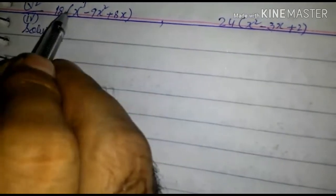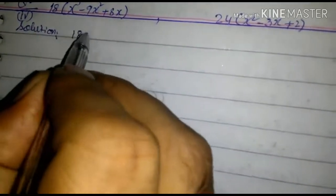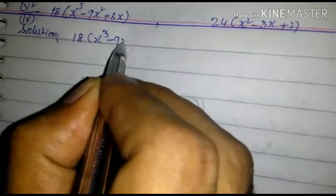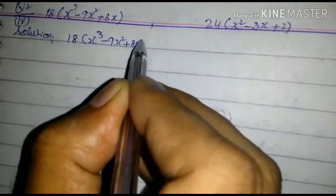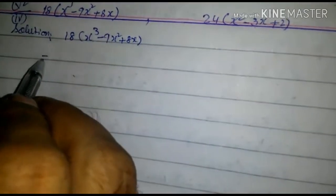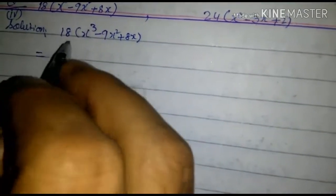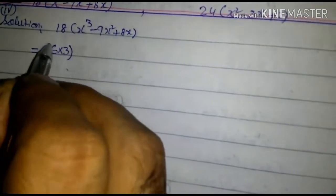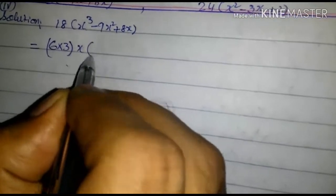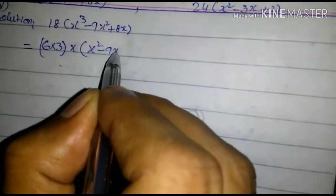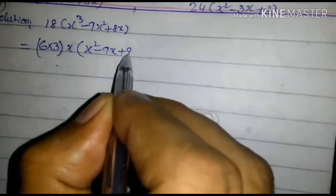First consider 18x³ - 9x² + 8x. x is common in all three terms. We can write 18 as 6 into 3. x is common, so we have x² - 9x + 8.